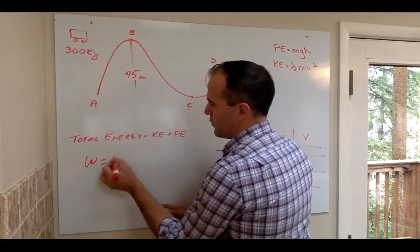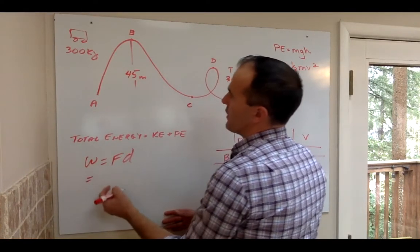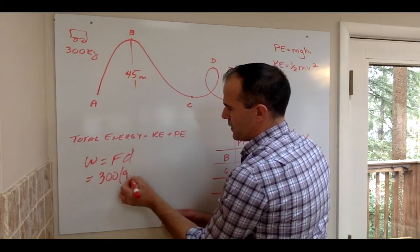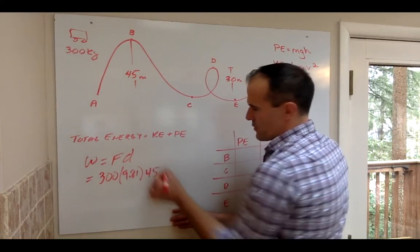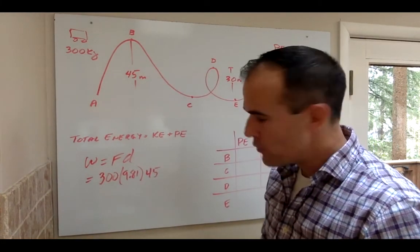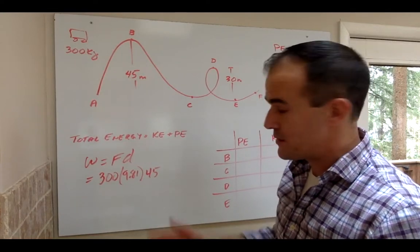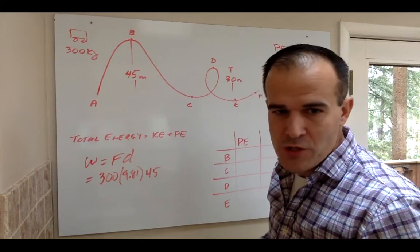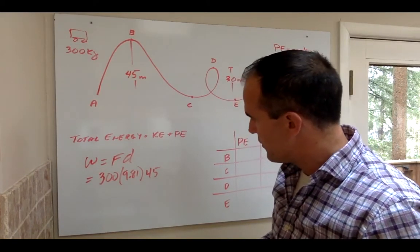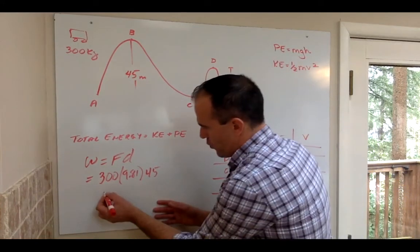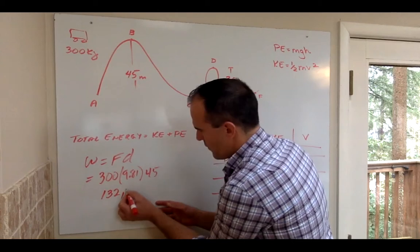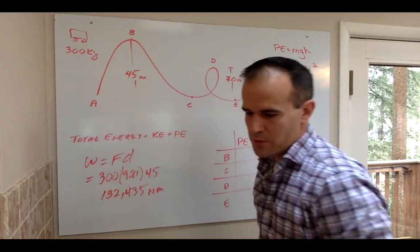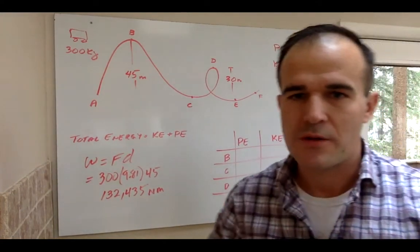So work is just force times displacement. So we're really just going to figure out the weight because it's a vertical problem. The weight is 300 times gravity, 9.81, times the 45 meters for the height. So if you calculate your work done, which by the way is the same formula for potential energy, we'll know how much work or how much energy you have. So let's figure out that number. 300, gravity, 45. I get 132,435 newton meters or joules of energy. Now this is the energy we're going to have through the rest of the ride.